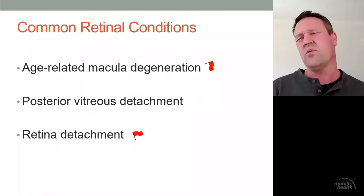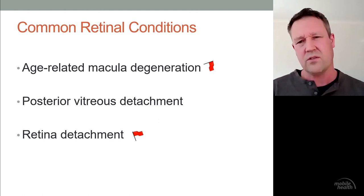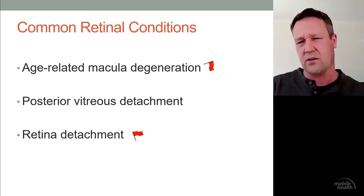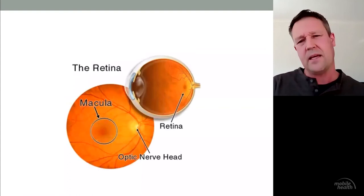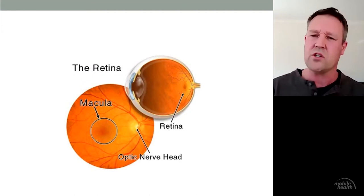Now we'll look at retinal conditions we see quite often in the eye clinic: macular degeneration, posterior vitreous detachment, and retinal detachment. Macular degeneration can be both an acute and non-acute problem depending on the type. Retinal detachment is definitely an acute problem — hence the red flag. Just to remind you, the retina is like the film of the camera. In the centre of the back of the eye, the macula is responsible for our central vision — the vision we're testing when we use a Snellen chart.